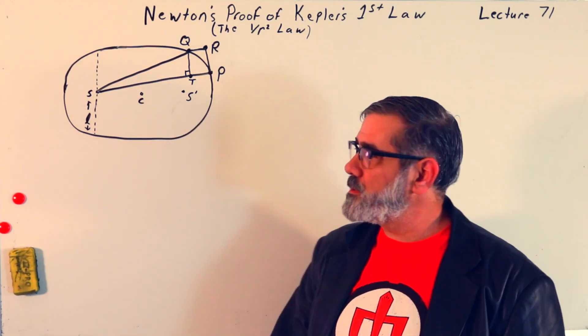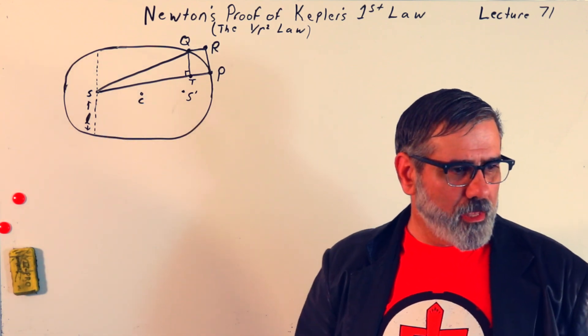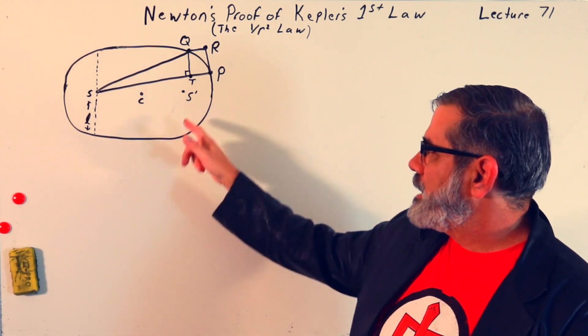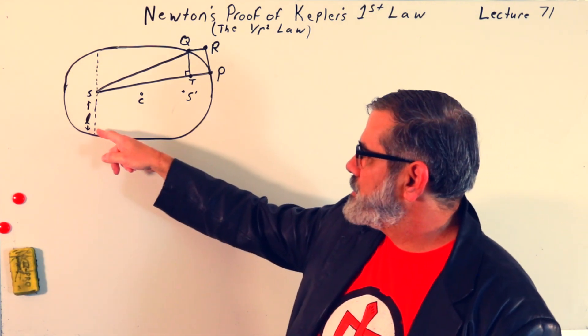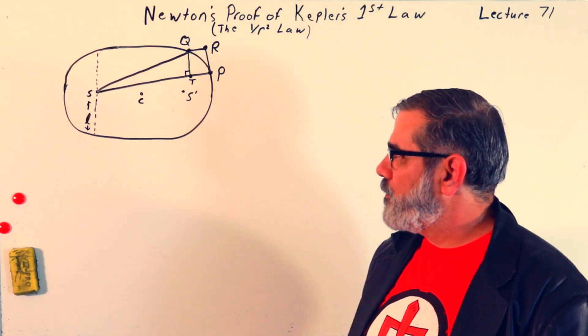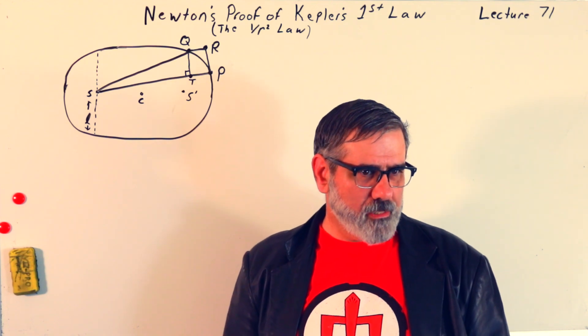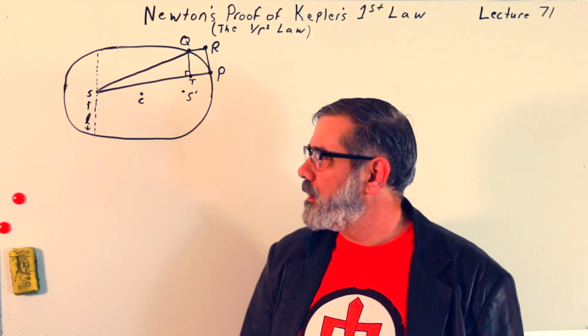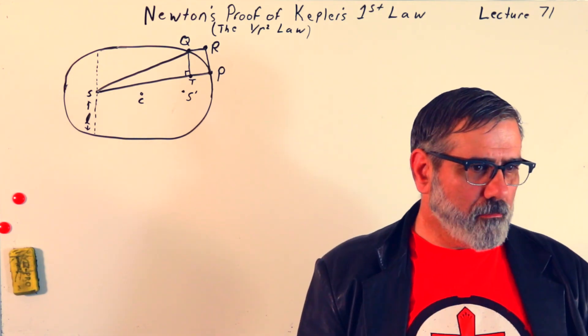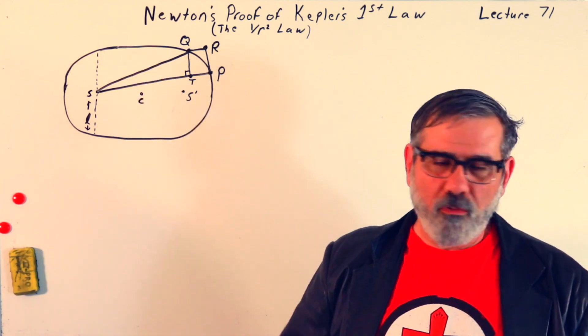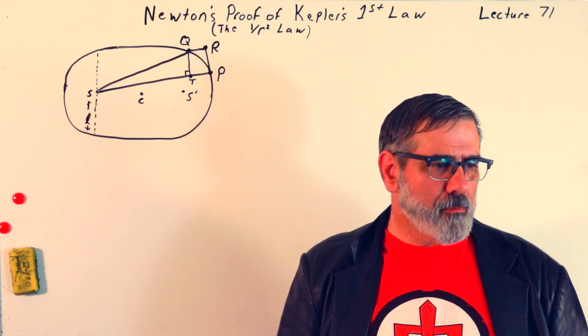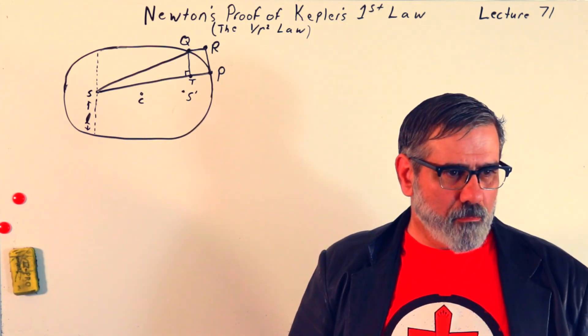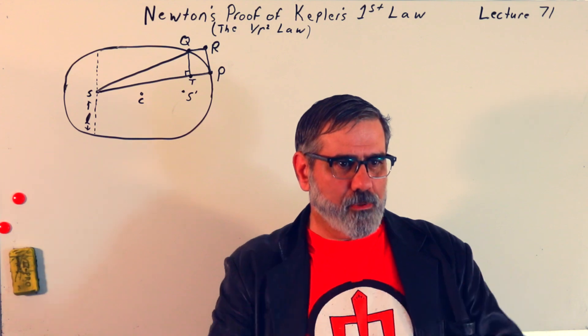C is for the center of the ellipse. S is the focus where we imagine the sun to be. S prime is just the other focus. We're not going to use it. And the distance from here to here, it's like the equivalent of a diameter, in a sense, for an ellipse. And that's the latus rectum. It is related to the ratio, it's proportional to the ratio, or actually equal, not proportional, but equal to the ratio of the semi-major to semi-minor axes.